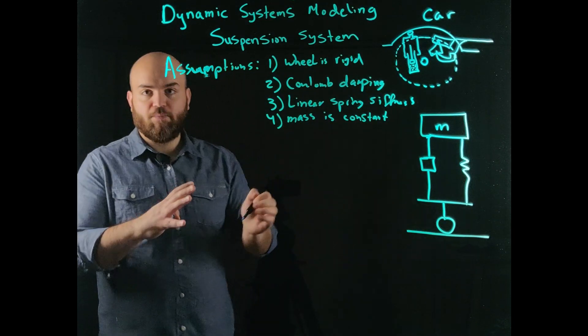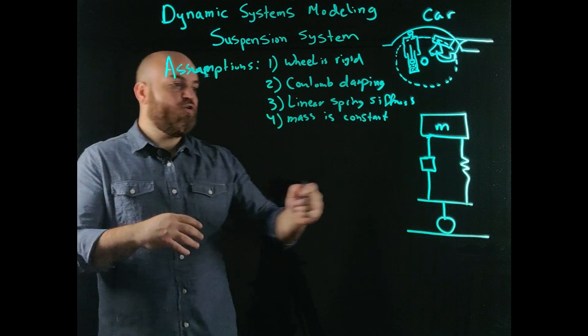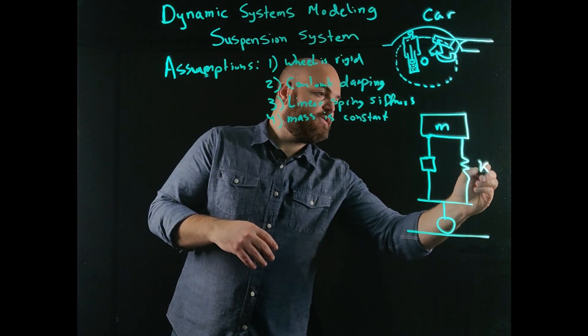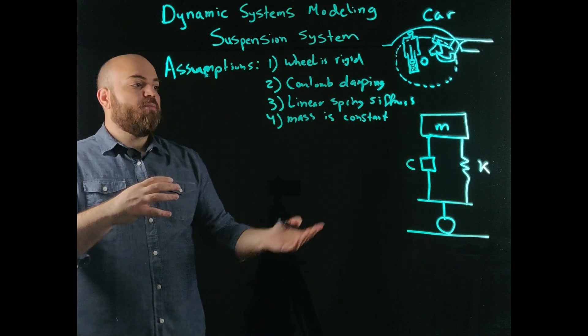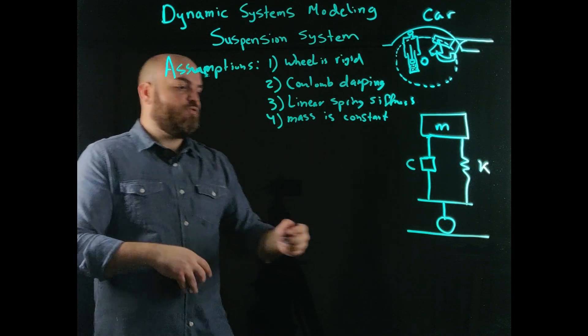Now that's a very small wheel, but whatever. This is exaggerated to show you that let's call this K and C. So I have this linear spring where I apply the force to, it will react to it.